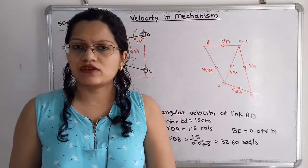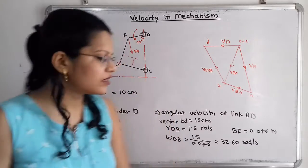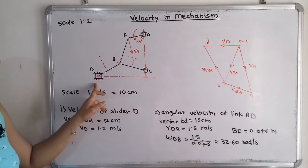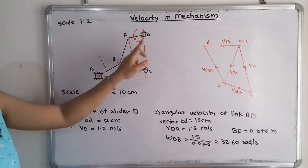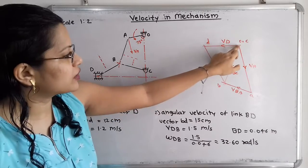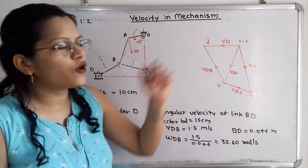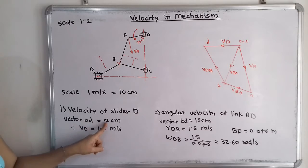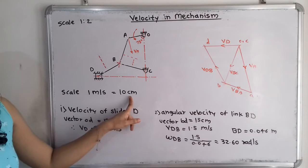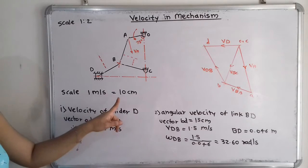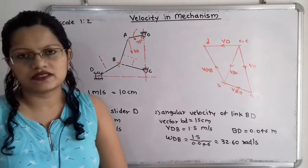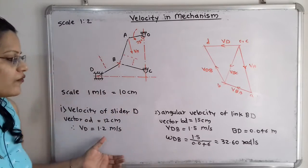Now for the calculations. The first question asks for the velocity of slider D. The slider D has reciprocating motion with respect to fixed points O and C, so we measure the horizontal vector oD in the velocity diagram, which gives 12 cm. Using our scale of 1 m/s = 10 cm, the velocity of slider D = 12/10 = 1.2 m/s. This is the answer to the first question.